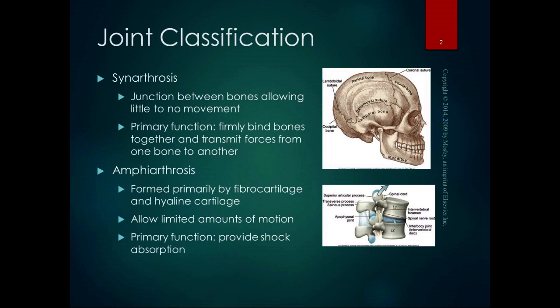We're going to talk about three classifications of joints, and then within one of the classifications we're going to talk about specific types. The synarthrosis is the first type. If you break down the word, 'syn' is like a negative, so it means very little motion of the joint. The junction between the joints allows for little to no movement. These are places where we want the bones firmly bound together and we want to transmit forces from one bone to another.